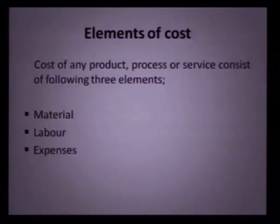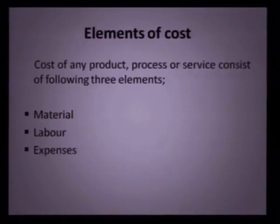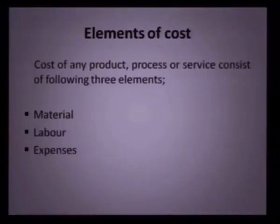What are the major elements of cost? Once you take any product, process or service, basically we understand that there are three major elements. Any product is made of some material — so the first element of cost is material. Then, you cannot do anything unless there is labor who produces it, so labor — human effort — is the second element. Then other than material and labor, there are some expenses. So basically we divide the cost in three categories: material, labor, and expenses.